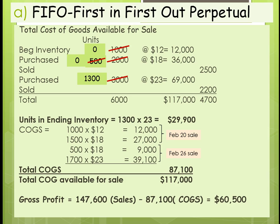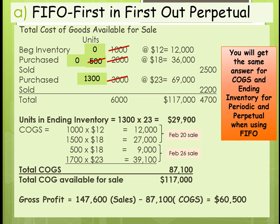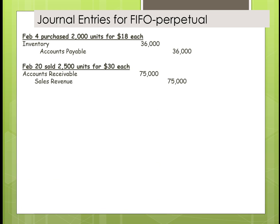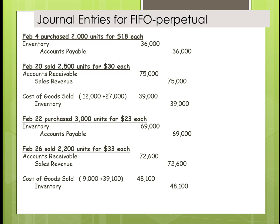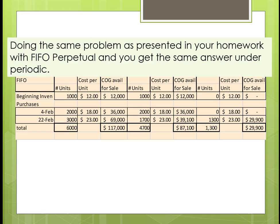Our gross profit is $60,500. You get exactly the same answer for perpetual and periodic when using FIFO, and that's why, under the international standard, it's the only one they allow — they do not allow LIFO. Now let's look at all the journal entries: our purchases, then our sales. Remember, we have to book cost of goods sold. Then more purchases — remember, everything goes to inventory under perpetual. Then we have our next sale and we book cost of goods sold again. At the end of the month, you end up with 1,300 units at $23, and you get the same answer under perpetual and periodic for FIFO only.